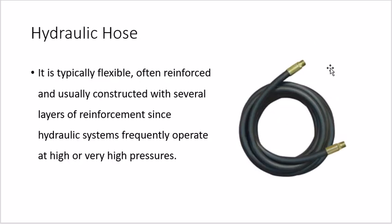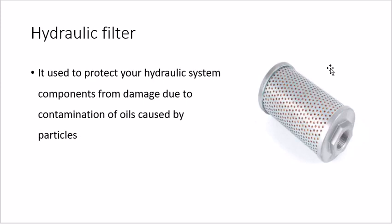Hydraulic hoses are pipes that connect the components, but they are not ordinary pipes — they must withstand high pressure. One end connects to the pump outlet and the other end connects to the implement. Because they carry high pressure from the pump to the implement, these hoses must be flexible yet capable of withstanding large forces.